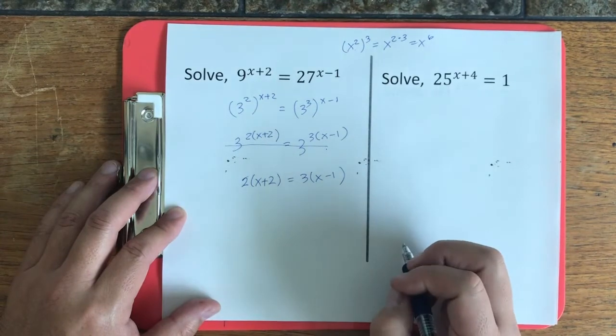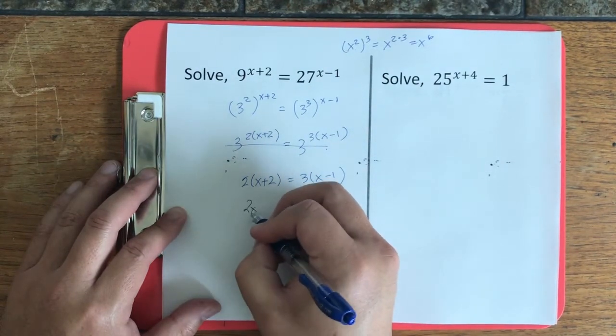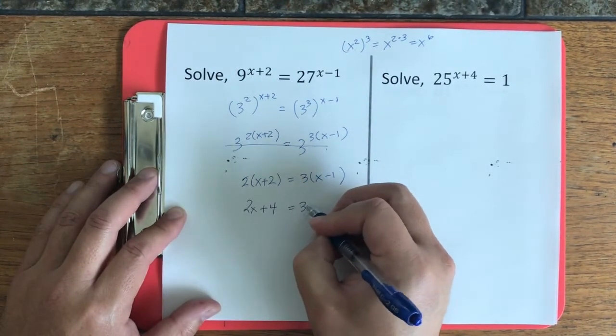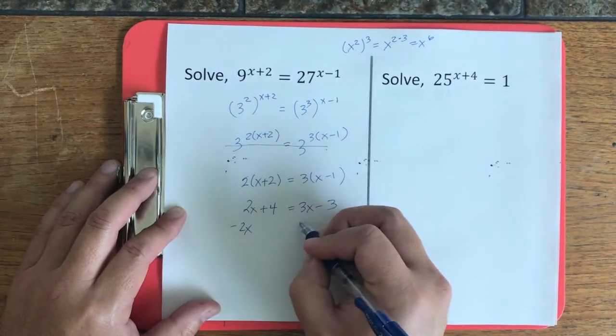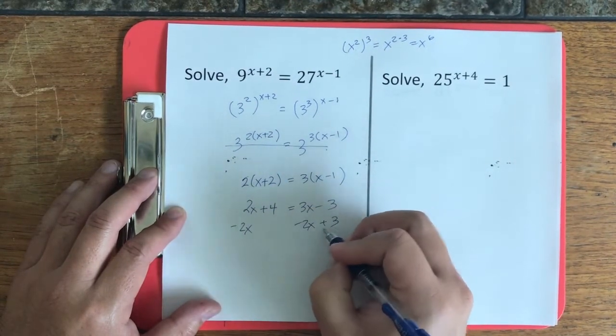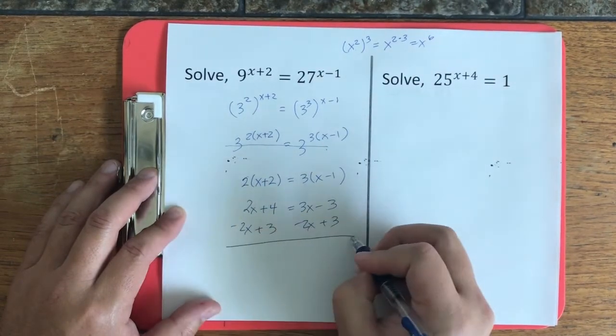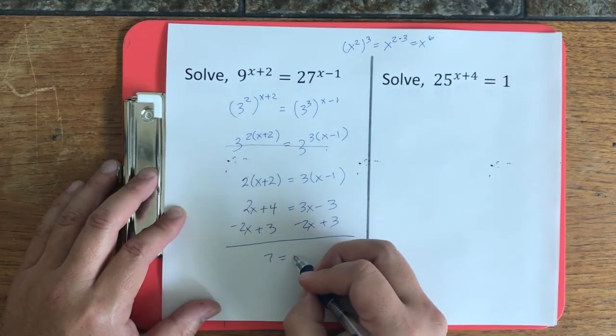And then now we solve this linear equation. I subtract 2x from both sides, add 3 to both sides, and end up with 7 is equal to x.